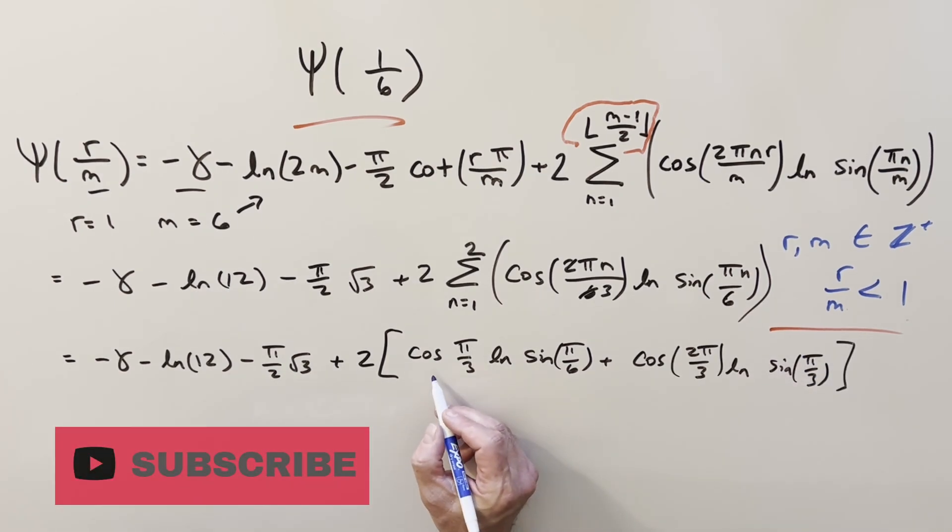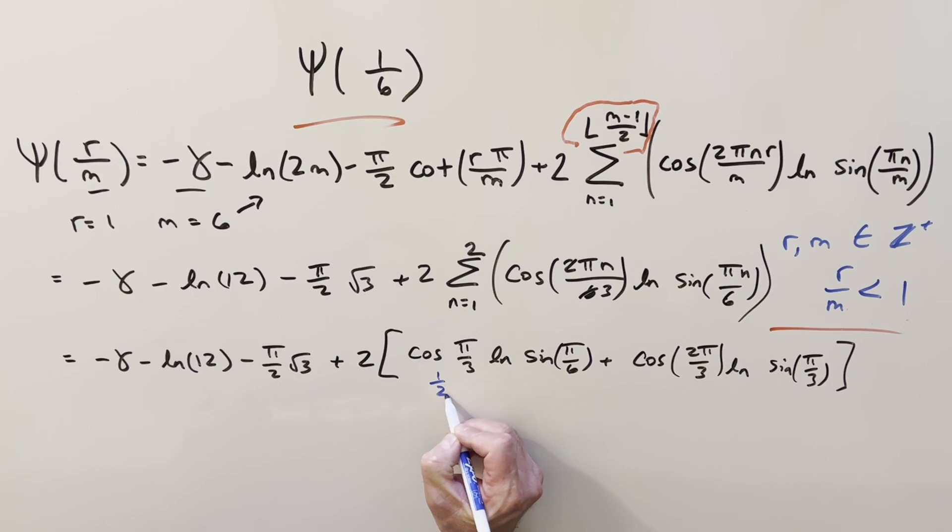Then let's just get the values for everything. Cosine pi over 3, this is 1 half here. Sine pi over 6, that's also 1 half. Cosine 2 pi over 3 minus 1 half. This one's going to be square root of 3 over 2.